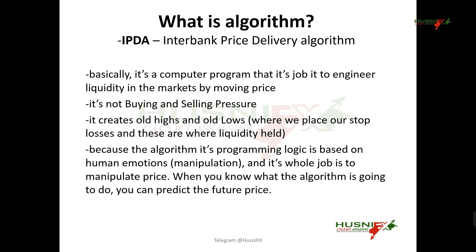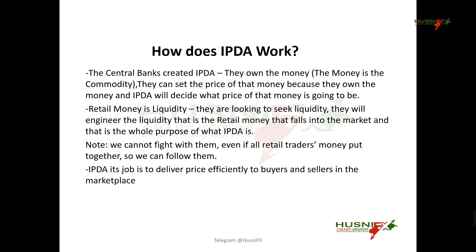We have to understand how the IBDA works. The central banks created the algorithm — the IBDA — because they own the money, meaning the currency. They can set the price of that money, and because they own the money, they will decide what price it is going to be. The algorithm is going to decide what the price of the money is going to be.